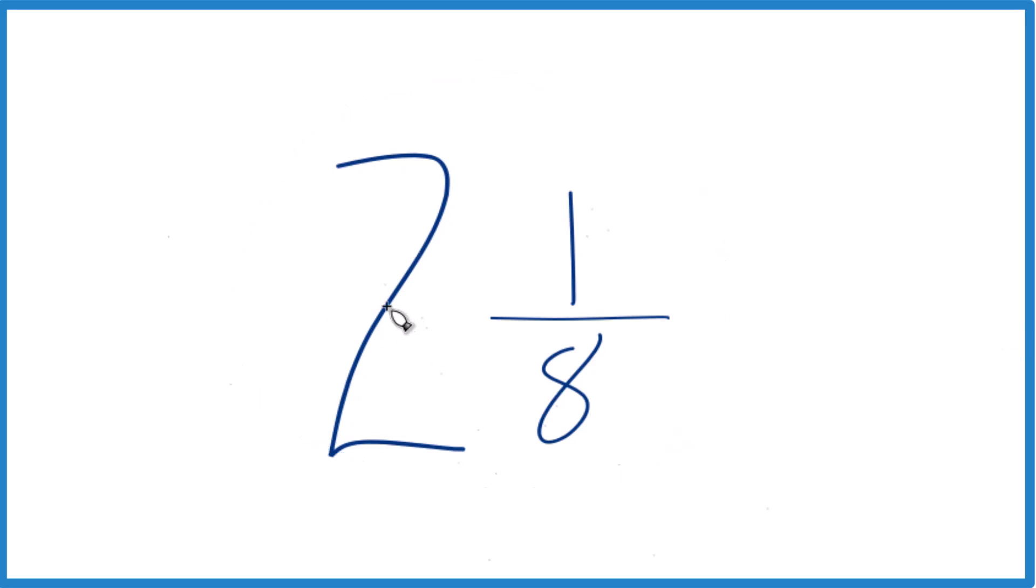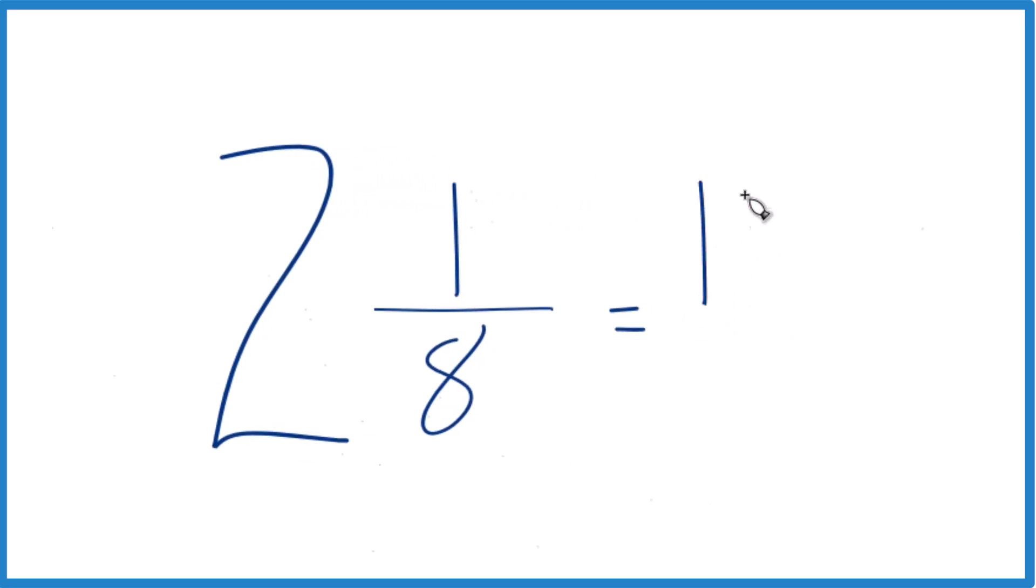So you take the whole number 2, multiply that by 8. 2 times 8, that's 16. So we have 16, then we add the 1. 16 plus 1, that is 17. That's going to be our numerator here.